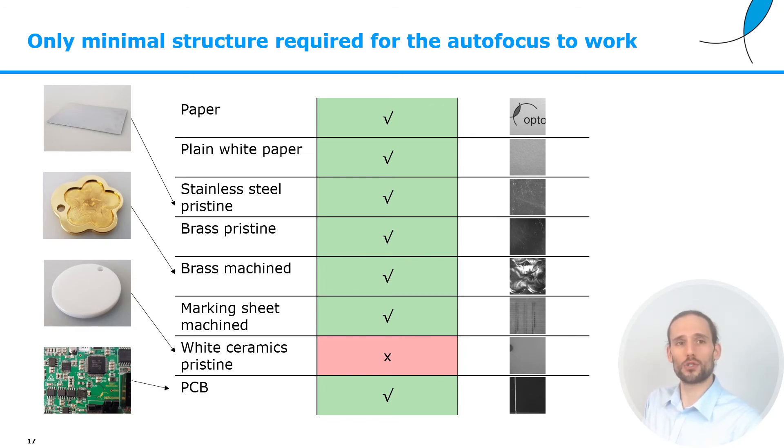As already mentioned before, this approach, the distance sensor, works very well for almost any material. And we found this out basically by seeing that autofocus requires only minimal structure to function properly. We have done tests on paper, stainless steel, brass, PCBs, and we've seen that for all these materials, the distance sensor works very well. The only problems we had were with white ceramics, and this is probably due to a lack of contrast, a lack of structure.